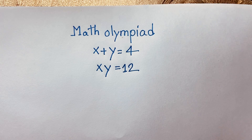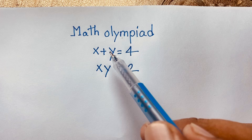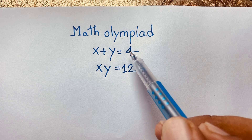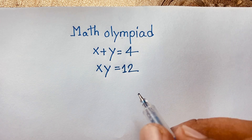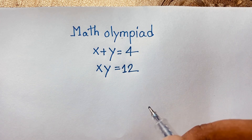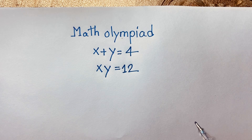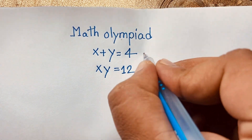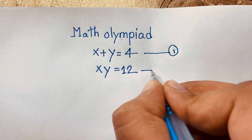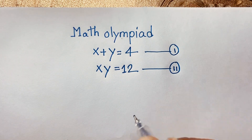Welcome everyone to Russia's Classroom. We have solved a nice math olympiad question: x plus y is equal to 4, and x times y is equal to 12. We'll find out the value of x and y. This is our first equation and this is our second equation.